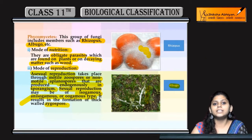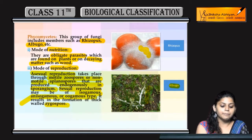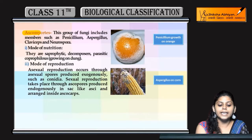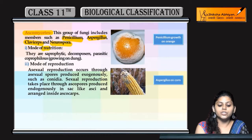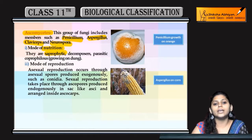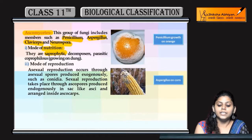To Phycomycetes mein humne dekha: nutrition parasitic nature ki hoti hai aur reproduction asexually bhi aur sexually bhi hoti hai. Next Ascomycetes ki baat karein — iske examples hain Penicillium, Aspergillus, Claviceps and Neurospora. In ka mode of nutrition: they are saprophytic — dead organic matters pe dependent hote hain.